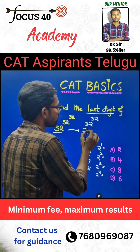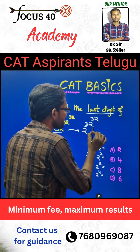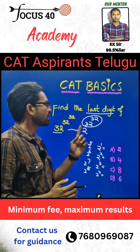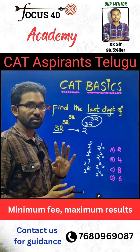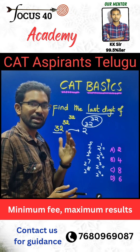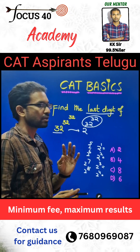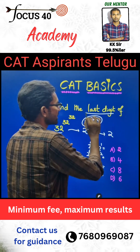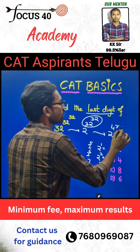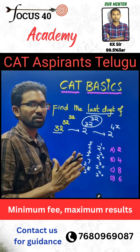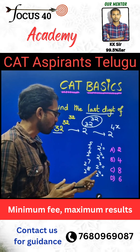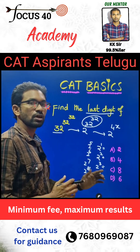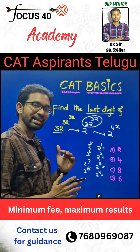Now coming back to the question. Here we have 32 power 32. We have 4 multiples. If there is 4 in 32, the power will be a multiple of 4 — that is, 4x. So 2 power 4 ends in 6, 2 power 8 ends in 6, and 2 power anything that is a multiple of 4 will end in 6.